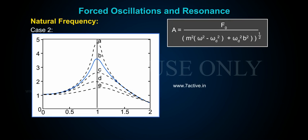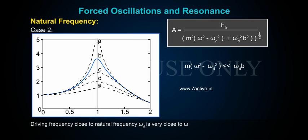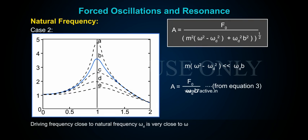Case two: Driving frequency close to natural frequency. When ωd is very close to ω, we have m|ω² − ωd²| << ωd·b, and the amplitude becomes A = F₀ / (ωd·b), from equation three.